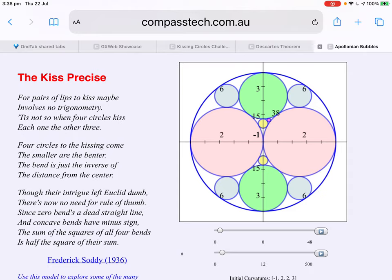Now, Frederick Soddy is remembered not for his poetry skills. He was awarded the Nobel Prize for chemistry. He discovered isotopes. But, in his heart of hearts, he was a mathematician too. And he got caught up in kissing circles.